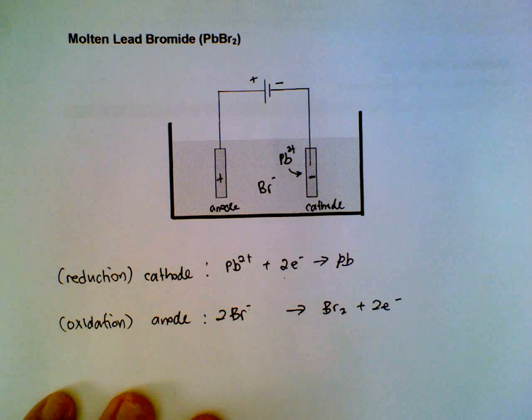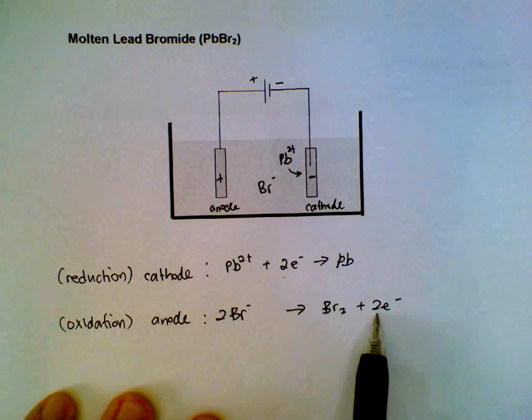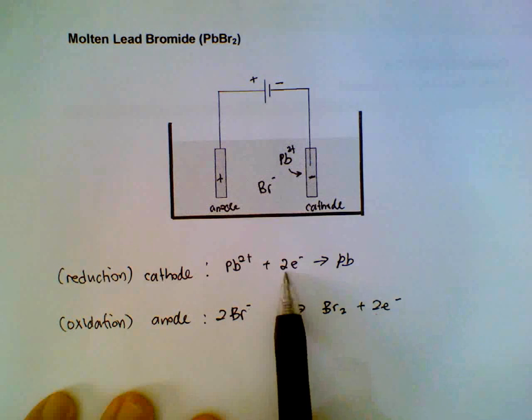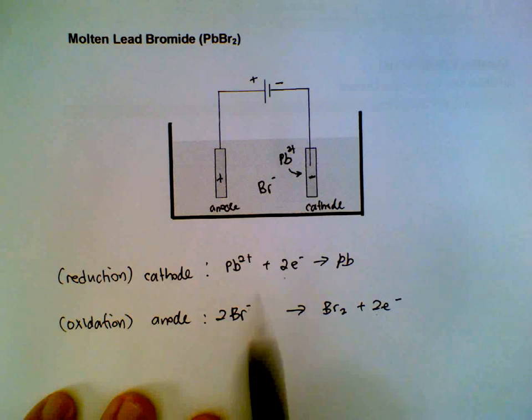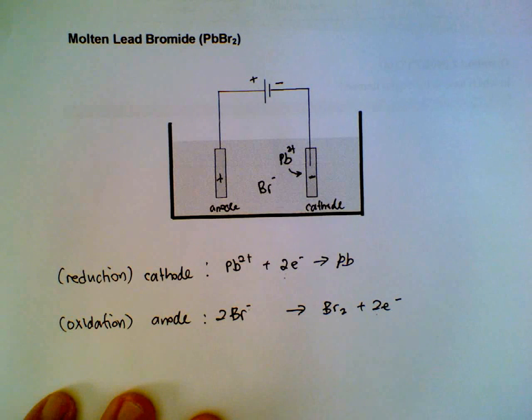If you do require the overall equation, the same thing - we check the electrons to make sure they are the same. In this case we have two and two, so there's no need to make any adjustments or multiply any factor. We can merge them directly.